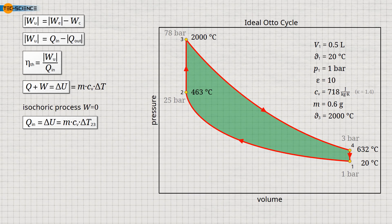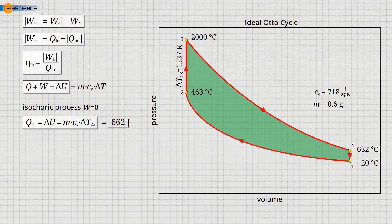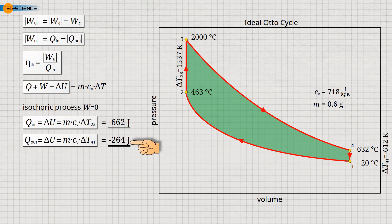As an exercise, it is recommended that you calculate the temperatures and pressures in the various states yourself. To calculate the heat supplied, we only need the temperature change from state 2 to 3, which in this case is 1,537°C. Using this temperature change along with the specific heat capacity and mass of the gas, we obtain a heat energy delivered during combustion of 662 joules. Similarly, the heat rejected during the assumed isochoric cooling from state 4 to 1 can be determined from the temperature change of minus 612°C. In this case, the heat energy is minus 264 joules — the minus sign indicates that heat was removed from the gas due to the temperature decrease.